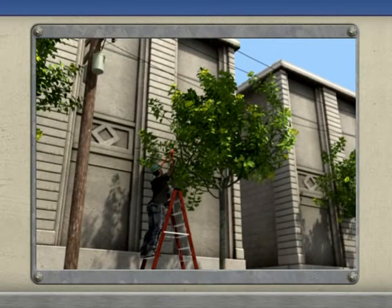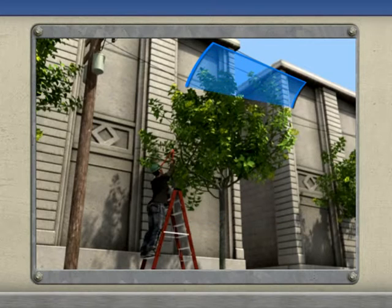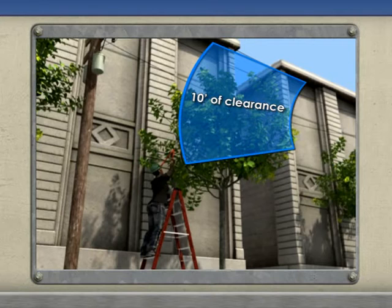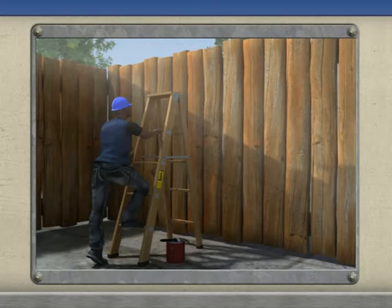When selecting a ladder, be sure to check for hazards such as exposed electrical equipment or power lines. If electrical hazards exist, choose a non-conductive ladder such as a wood or reinforced plastic ladder, and maintain at least 10 feet of clearance from the hazard at all times. If a structure may not be stable enough to support leaning a straight ladder against it, choose a self-supporting step ladder instead. Never use a step ladder as a straight ladder by leaning it against a supporting structure.